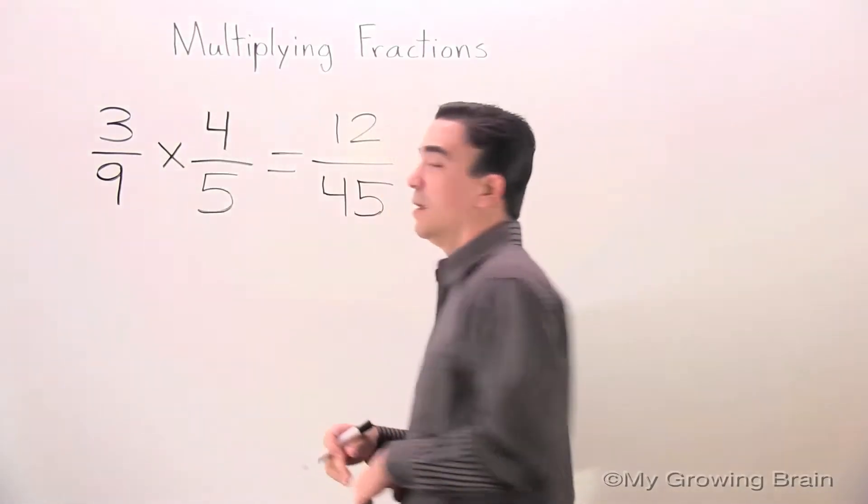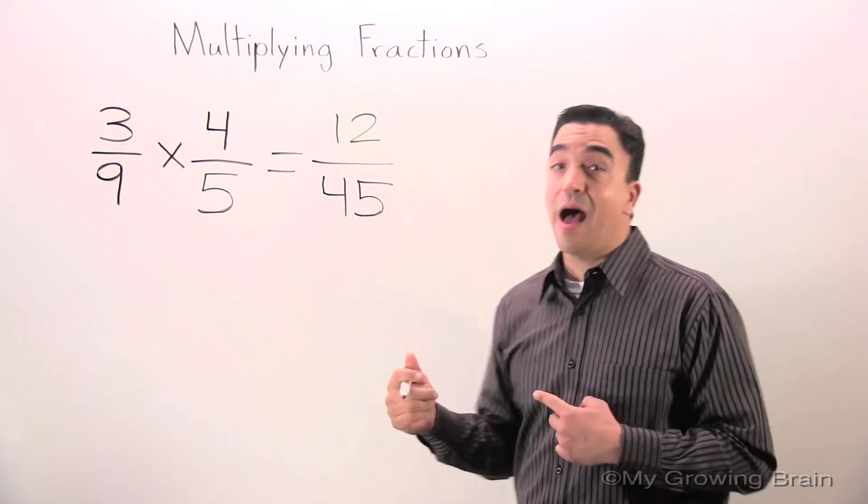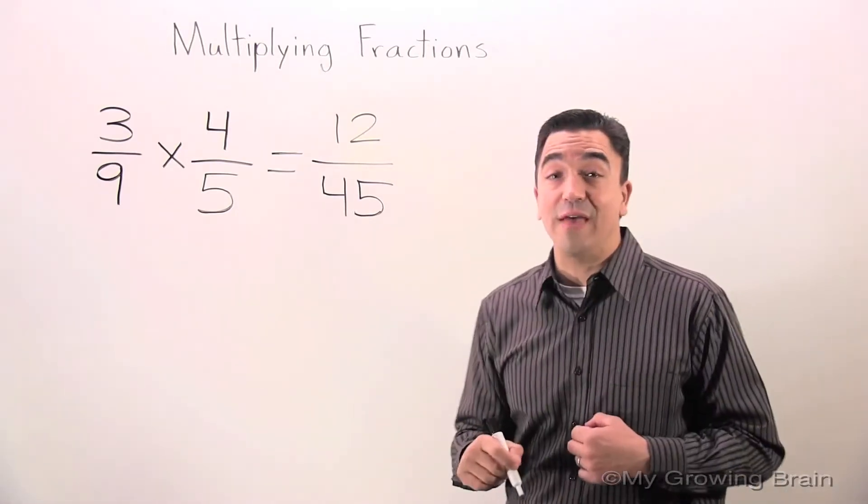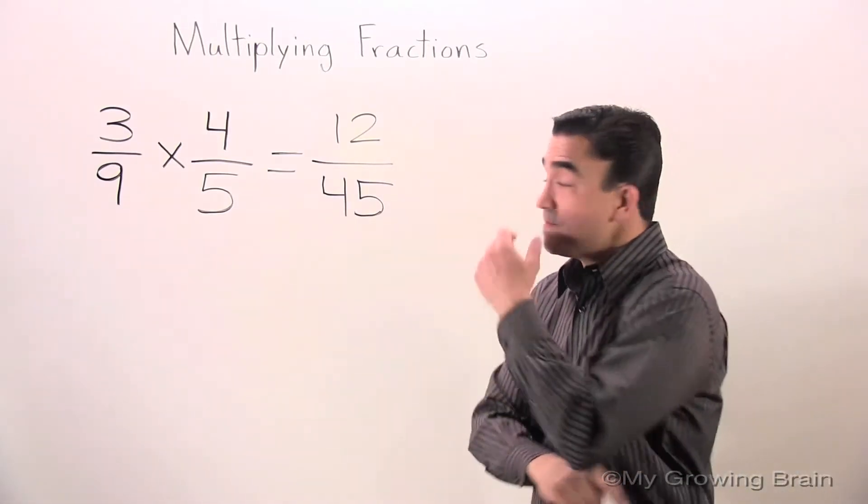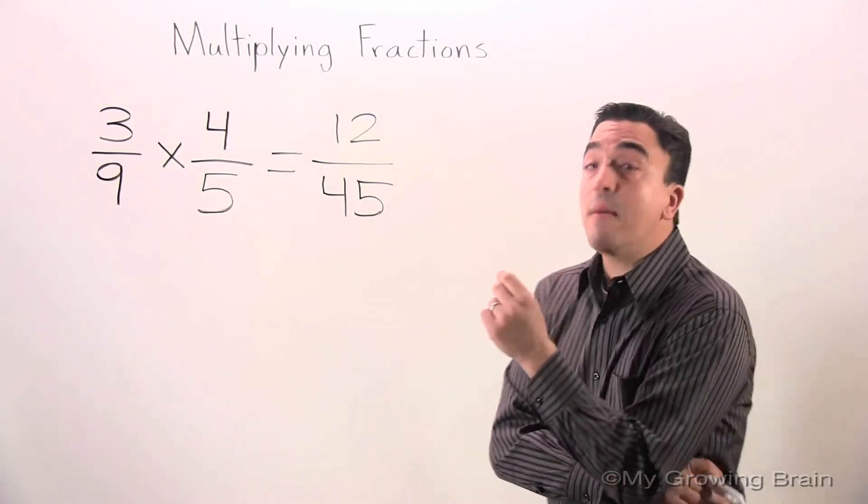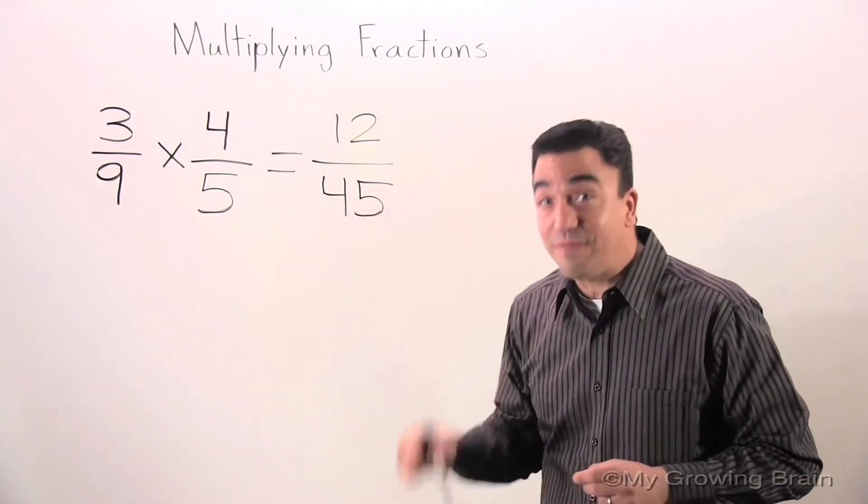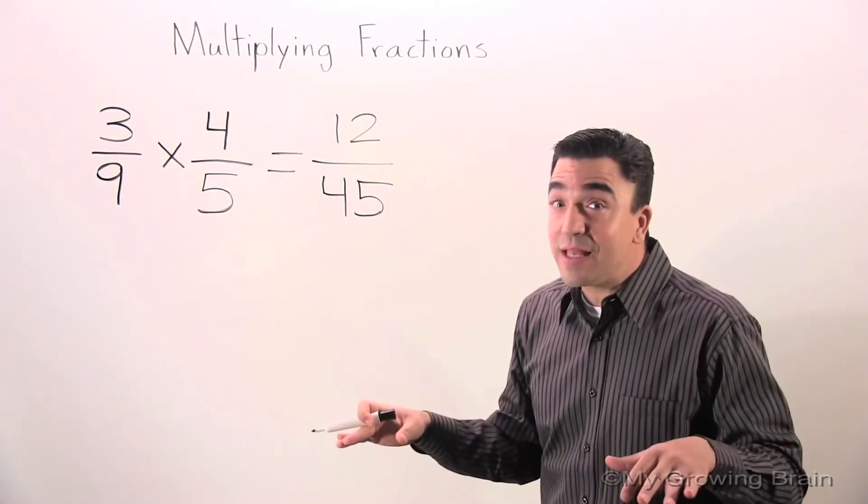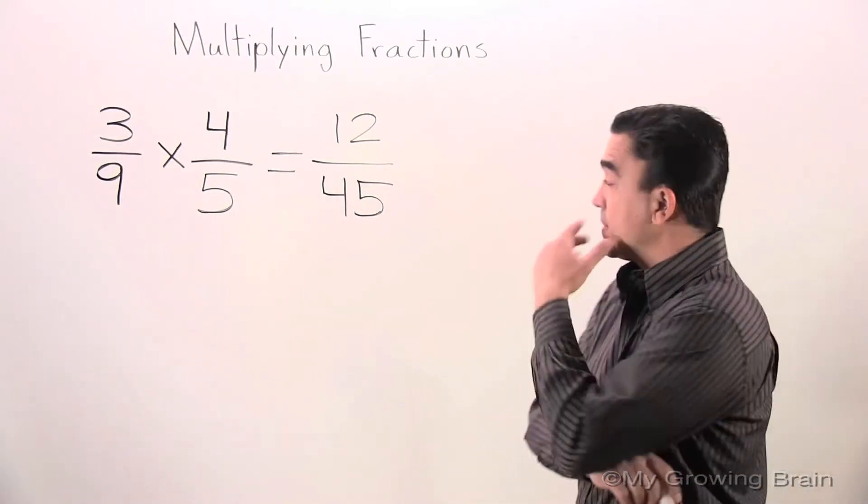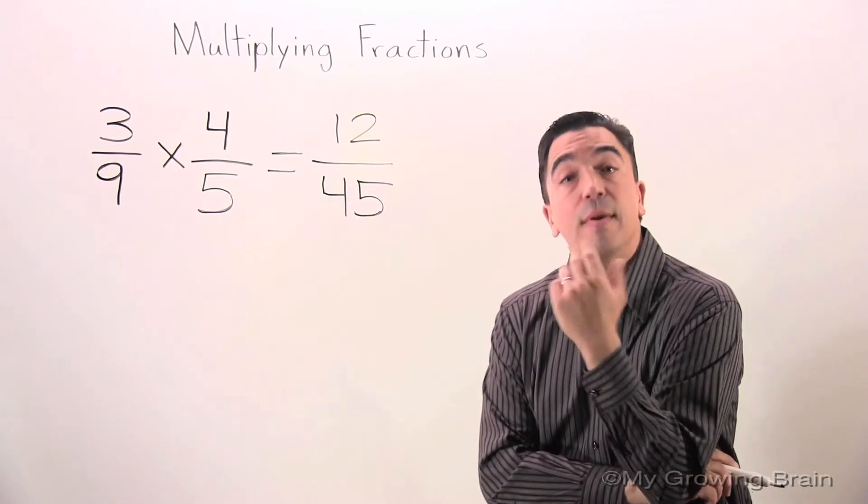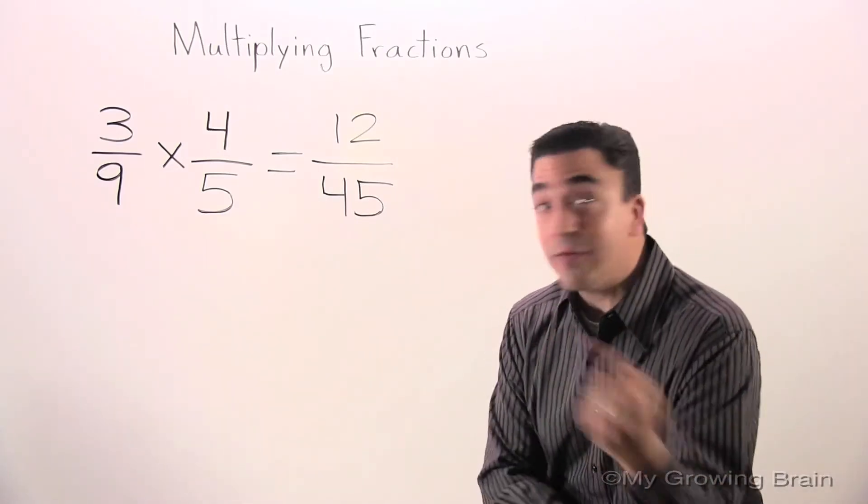Whoa, boy. This is a big number. I think I need to simplify this into simplest form. I've got to think of a number that can go into both 12 and 45 evenly that's greater than 1. How about 3? Let's do it.